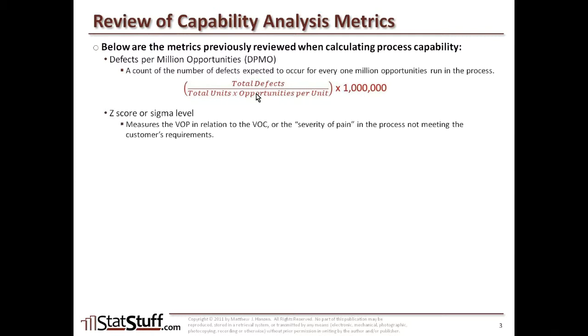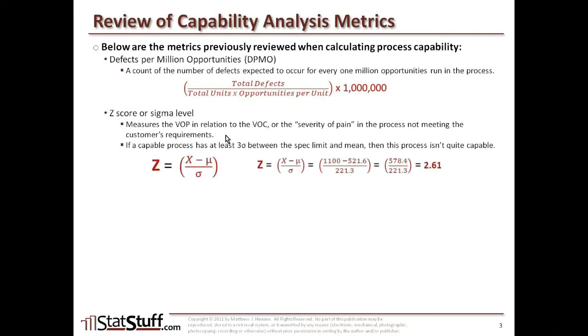Another metric we looked at was the Z-score, or the sigma level, and this would reflect the voice of the process in relationship to the voice of the customer. It is a measurement of the severity of pain that's occurring in the process where we're not meeting the customer's requirements. The calculation is Z-score equals X, which is some observation point, minus the mean divided by the standard deviation, where X could be something like an upper spec limit or a lower spec limit. An example was Z equals that formula where we plugged in the upper spec limit of 1100 subtracted from that the mean of 521.6 divided by the standard deviation of 221.3. We ended up with a Z-score of 2.61. Because that is less than 3, we would determine that the process is not quite capable because it's less than 3 standard deviations between the upper spec limit and the mean.